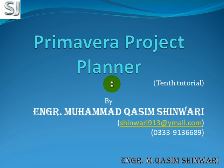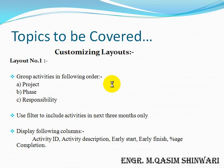Bismillahirrahmanirrahim, Assalamu Alaikum. Welcome to Primavera Project Planner 10th tutorial. I am Engineer Muhammad Kasim Shanwari to guide you. In this tutorial we will customize the layouts. We will make two layouts. In the first layout we have to group the activities in the following order: project, phase, and responsibility. We will apply a filter to show the next three activities in the next three months only, and we will also format the columns to display only activity ID, activity description, early start, early finish, and percentage completion. So let's start.